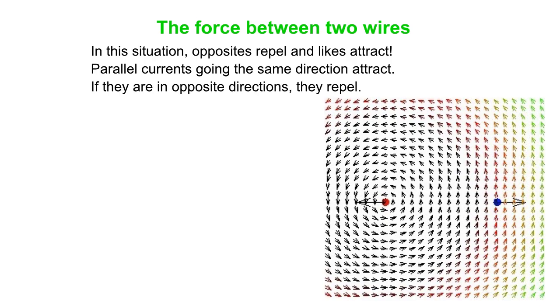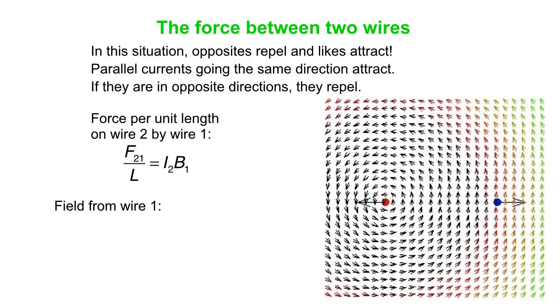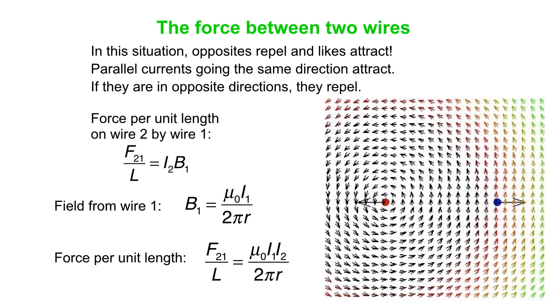The force per unit length on wire two, the blue one, by wire one, the red one, is simply I2 times B1. It's the current in wire two multiplied by the field from wire one. The field from wire one is given by mu naught I1 over 2 pi r. If you put that together with the first equation, then we get force per unit length is mu naught over 2 pi I1 I2 over r.